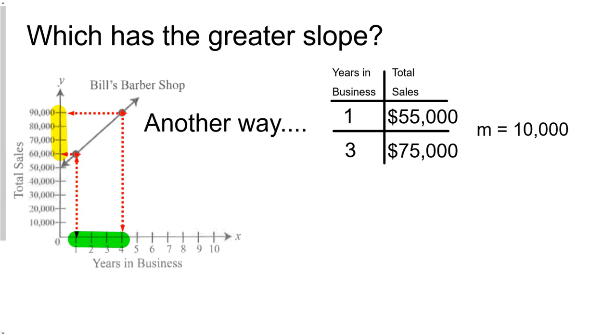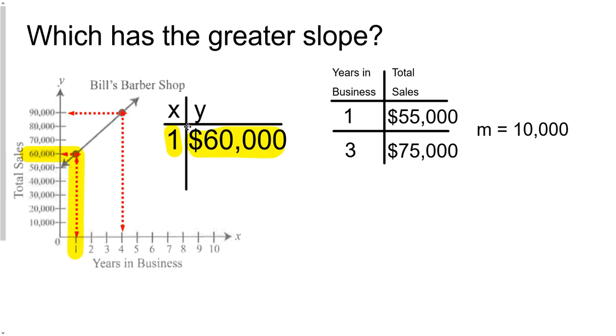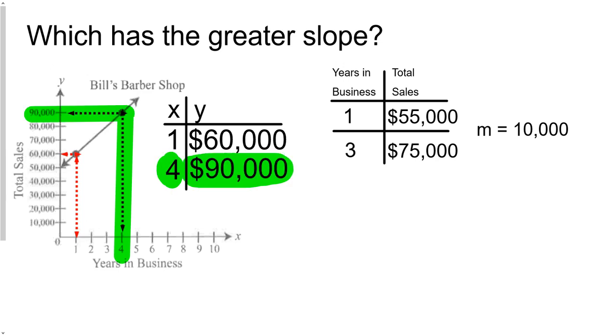Okay. And there's one other way we can do this. We can actually go back to the graph, and we can see that this point right here is right over 1. So we'd put 1 in for x. And it lines up with 60,000. So we'd put up 60,000 for the y. And then we go and do the same thing for the other point. It's lined up right over 4 on the x value. And 90,000 on the y value. And we take this xy table that we created from this graph to just do y minus y over x minus x. And we'd find out the same thing. The slope is 10,000.